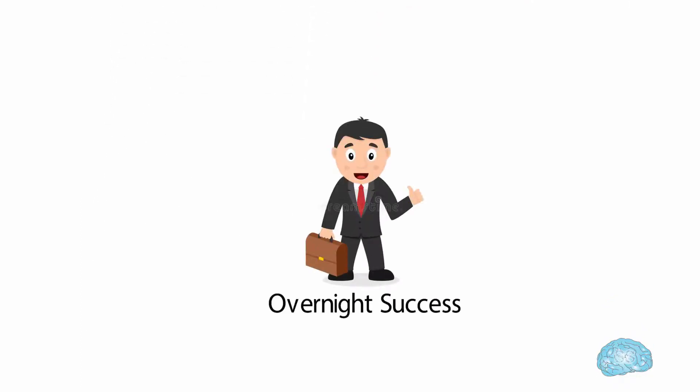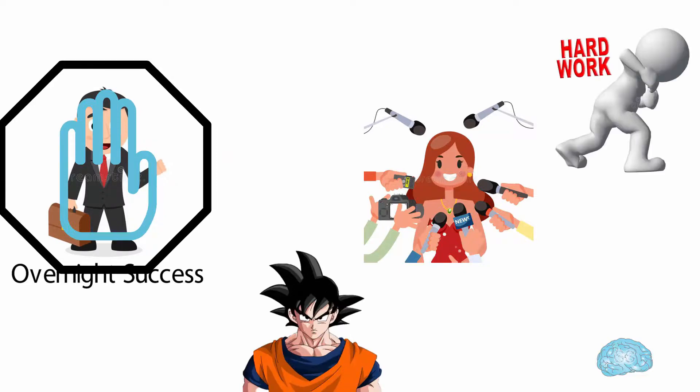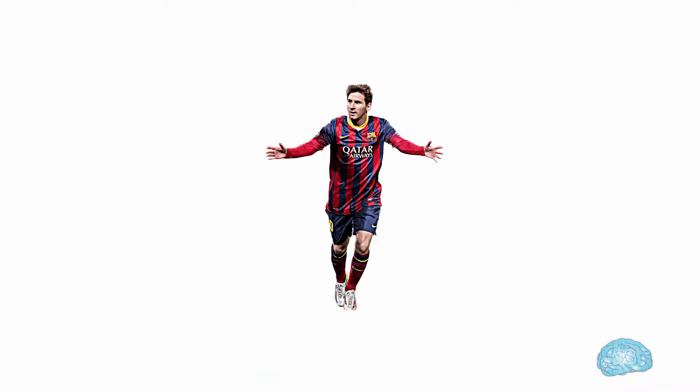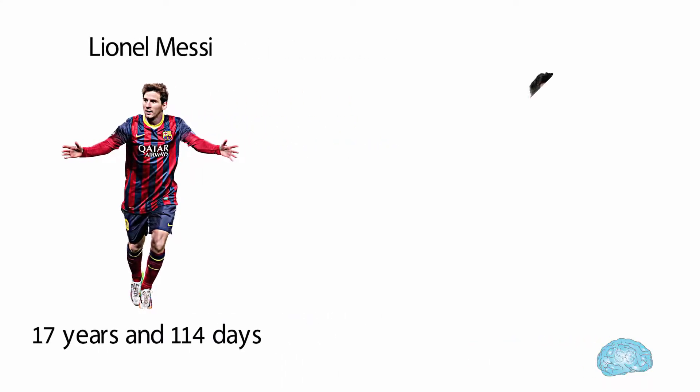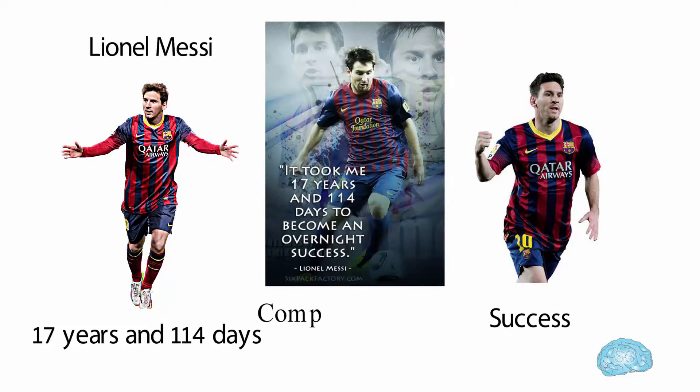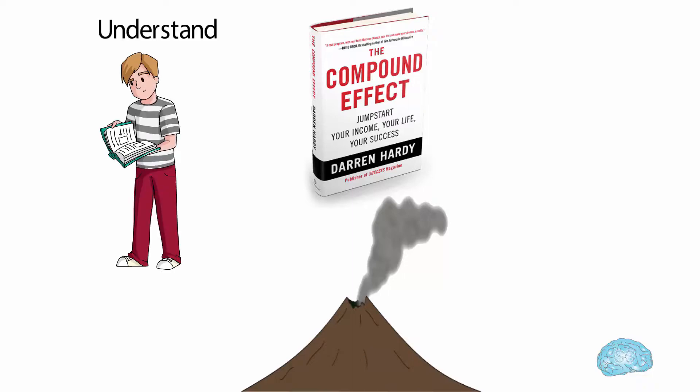We need to understand that there is nothing called overnight success. If you see someone who became famous in a night, it doesn't mean that they have not worked for it in the past. They might have done a lot of hard work and put immense efforts to achieve this, which we don't know. In context to this topic, the famous footballer Lionel Messi said: It took 17 years and 114 days to achieve success overnight. He worked continuously and created a compound effect for all those years, which gave him big results.